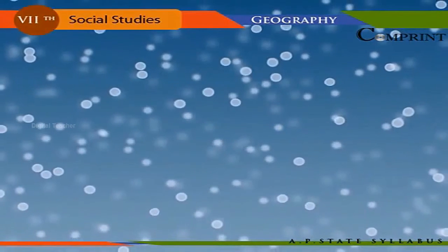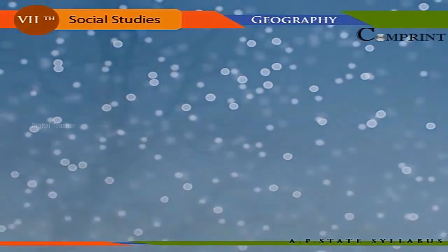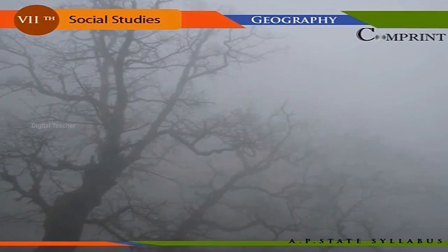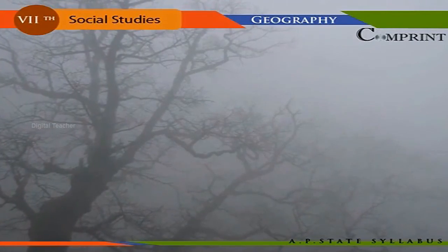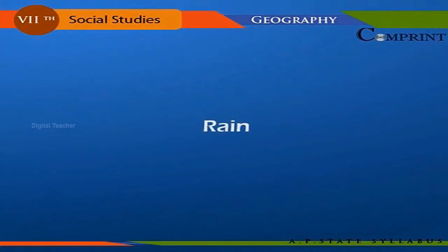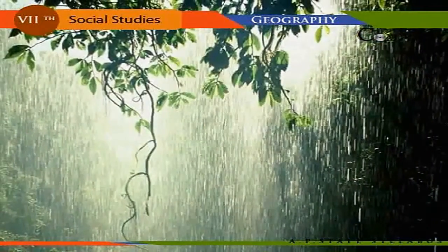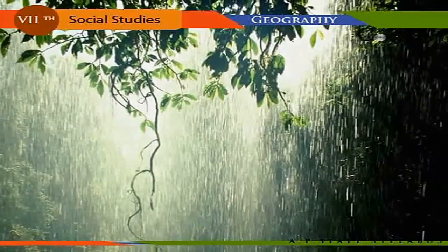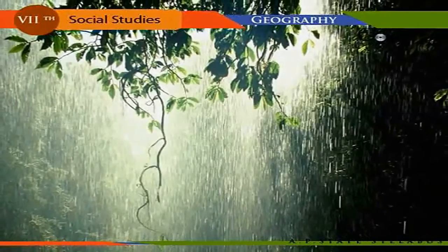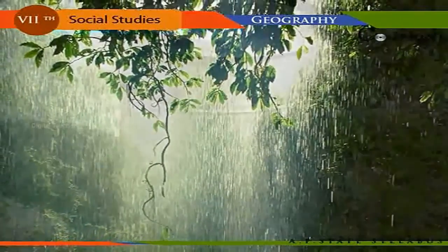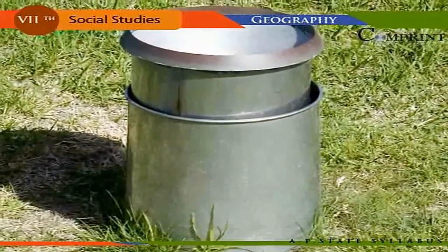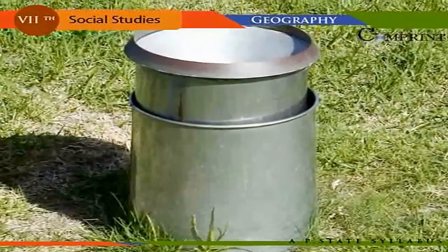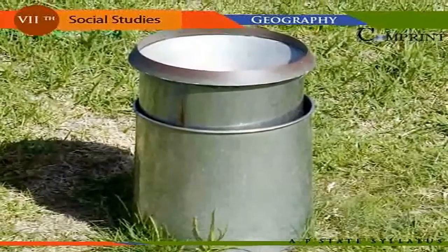The fall of moisture from the atmosphere is known as precipitation. Precipitation may take place in the form of rain, snow, hail, or fog. The falling of large drops of water from the clouds is known as rain. Rainfall is measured by a rain gauge. Rainfall is of three kinds: relief rain, convectional rain, and cyclonic rain.